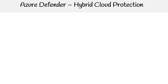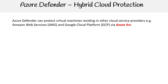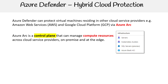The last thing to touch on is hybrid cloud protection. Azure Defender can protect VMs residing in other cloud service providers such as AWS and GCP via Azure Arc. Azure Arc is a control plane that can manage compute resources across cloud service providers, on-premise, and at the edge. For infrastructure, it can handle VMs, Kubernetes clusters, SQL servers, and Azure Stack HCI.